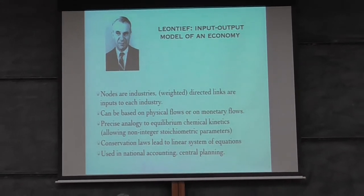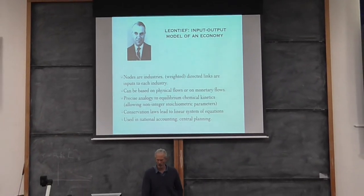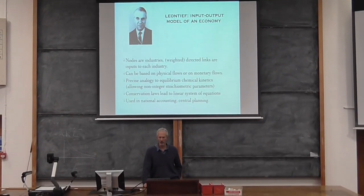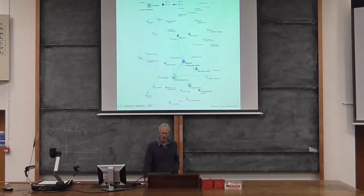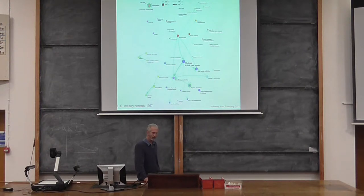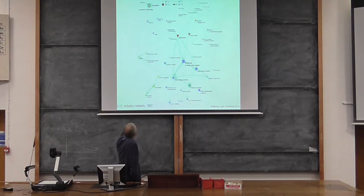Leontief's theory was originally used for centralized planning. We're trying to make an evolutionary version, where instead of using it for centralized planning, we just think about an economy as an evolving thing and think about the space of technologies as evolving in an evolutionary way. This is an example of the U.S. Industry Network in 1997, showing the main components in a fairly coarse-grained way, with arrows connecting the industries corresponding to the inputs of the industries.